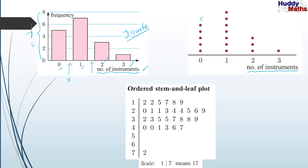Then there's something called an ordered stem and leaf plot. It's quite mathematical and not one that the average person in the street understands. You have a scale — one stroke seven means 17. And two with a zero means 20. So this row, the first one, would be the data set 12, 12, 15, 17, 18, and 19. You take off all the tens and just look at the second figure in each of these. We're going to look at this more later.